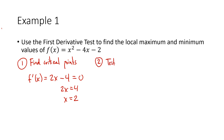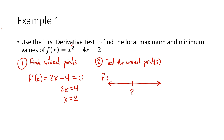The second thing we need to do is test the critical point — and if we've got multiple critical points we have to test them all. For the first derivative test, we do this by drawing a number line. I put all the critical points on that number line — in this case just the one. Then I want to know: what's the slope to the left of that critical point, and what's the slope to the right? Is it changing from positive to negative, negative to positive, or not changing at all?